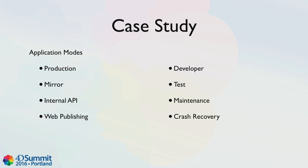We're running the same code base and can run it in up to eight different application modes simply by flipping switches: our production client-server mode, a mirroring mode which blocks all data entry and communicates with production for pulling changed records, an internal SOAP API, a web publishing mode which exposes only a certain portion of fields and records via an API to the outside world, and other obvious modes like developer, test, maintenance, and crash recovery — all of which manage access to data and functionality controlled by those modes.